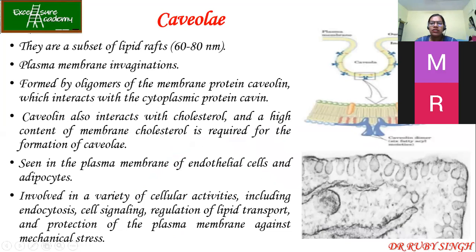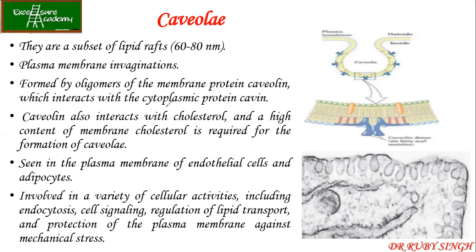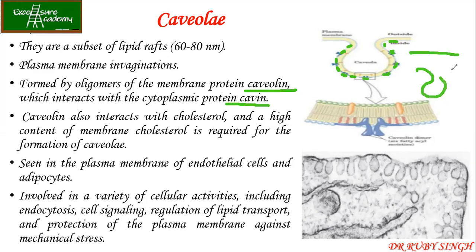Caveolae actually form invaginations on the plasma membrane. They are formed by oligomers of the membrane protein called caveolin, which interacts with the protein called cavin. Caveolin and cavin interact together and go and bind at the inner leaflet of the plasma membrane. With the help of ATP, they start contracting the plasma membrane, which results in the formation of invaginations. Caveolin also interacts with cholesterol for the formation of caveolae.